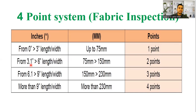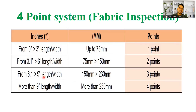If the defect is 0 to 6 inches, the penalty is 2 points. If the defect is between 6.1 and 9 inches in length or width, we note that and assign the corresponding penalty.